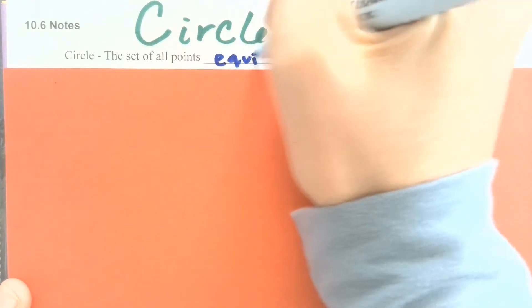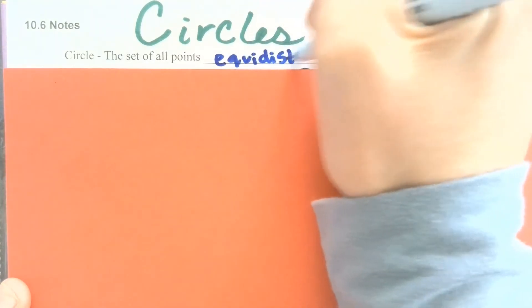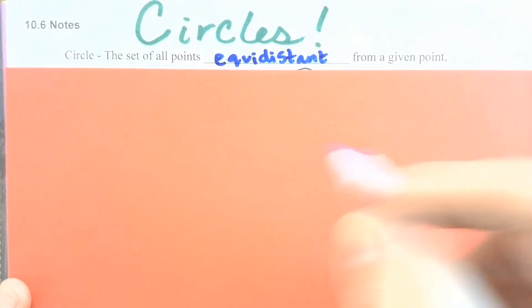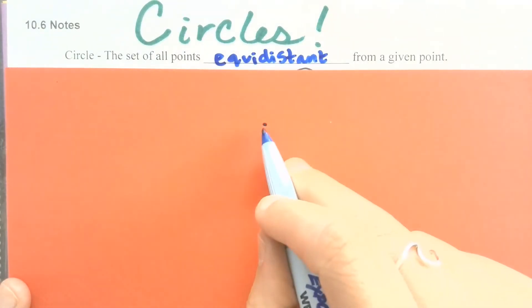Equidistant, which makes sense. If you've got a point here in the middle, then we would be talking about for a circle all of the points that are the exact same distance or that radius from the point in the middle.